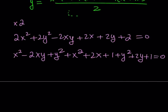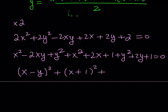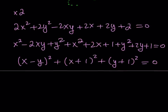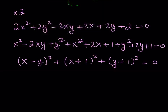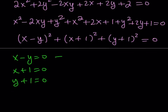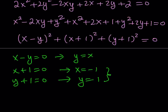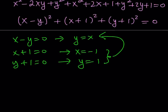This gives me (x minus y) squared, plus (x plus 1) squared, plus (y plus 1) squared equals 0. If you have the sum of perfect squares equal to 0, then each term must be 0 — you can't get 0 by adding non-negative terms unless they are all 0. This implies x minus y equals 0, x plus 1 equals 0, and y plus 1 equals 0. The first gives y equals x, the second gives x equals negative 1, and the third gives y equals negative 1. The second and third already verify the first, giving the ordered pair (negative 1, negative 1).